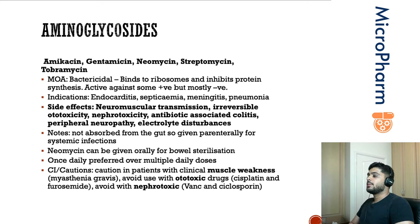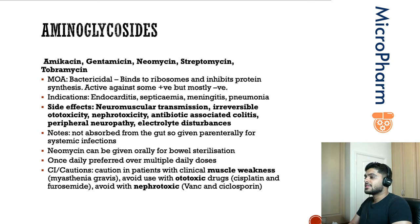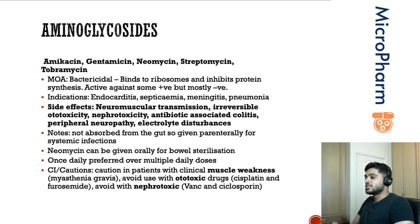Aminoglycosides are active against some gram-positive organisms, but the majority of their activity is against gram-negative organisms. The gram-positive organisms they are effective against include Staphylococcus aureus and MRSA, because these bacteria have oxygen-dependent transport systems on their surface that aminoglycosides use to enter the cell — systems not found on other gram-positive organisms.